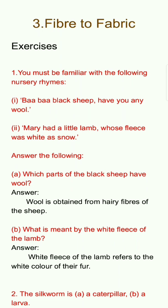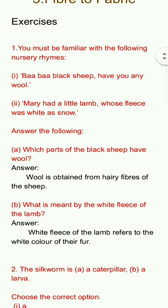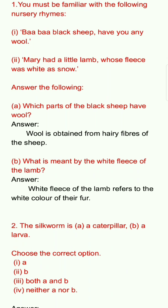Question number 1: You must be familiar with the following nursery rhymes. First one: Baba black sheep, have you any wool? Second one: Mary had a little lamb whose fleece was white as snow. Answer the following. A: Which part of the black sheep has wool? Answer: Wool is obtained from the hairy fibres of the sheep. B: What is meant by the white fleece of the lamb? Answer: White fleece of the lamb refers to the white colour of their fur.